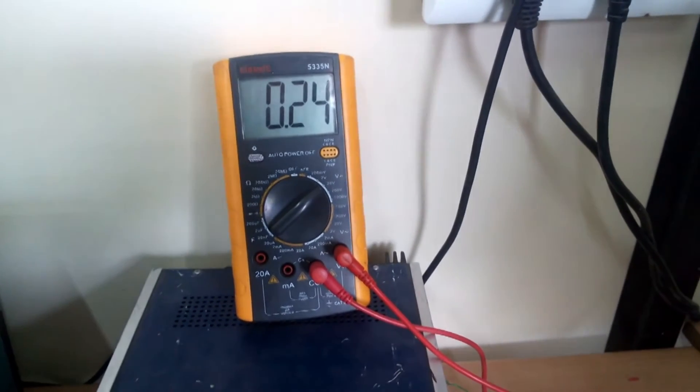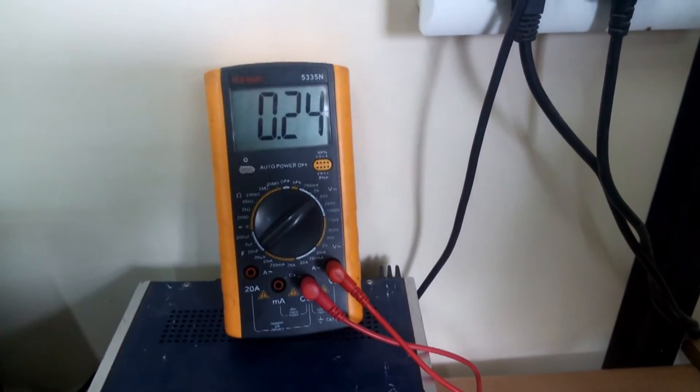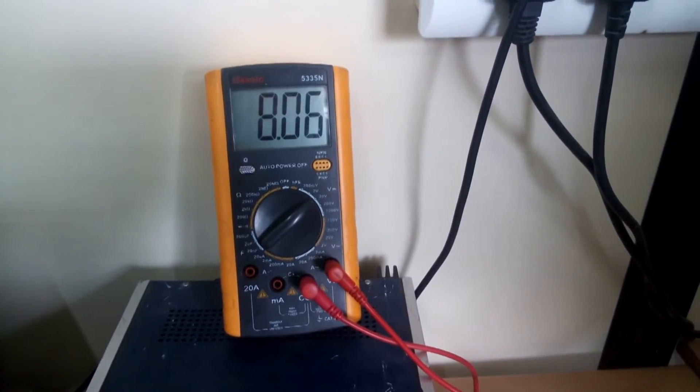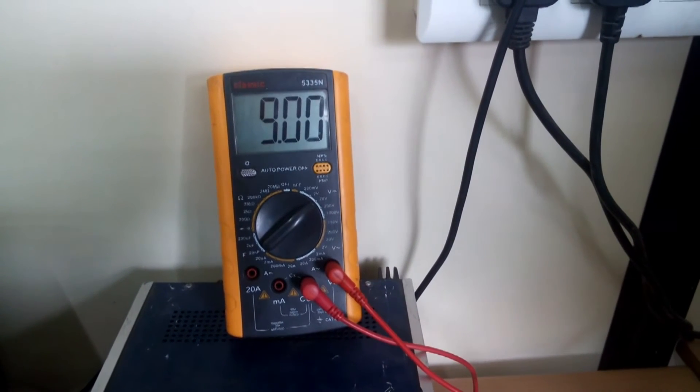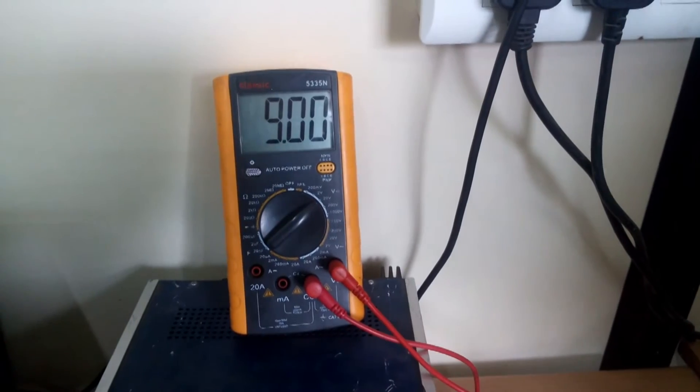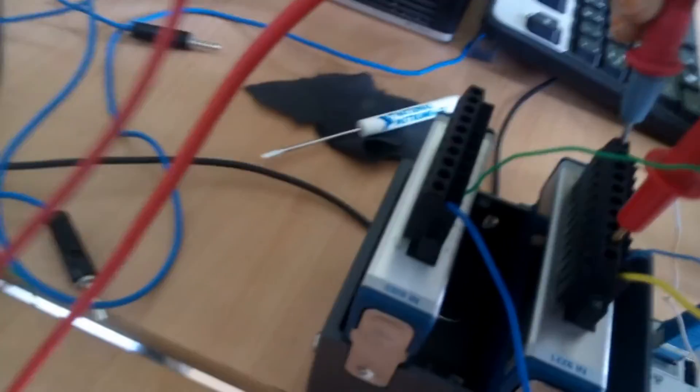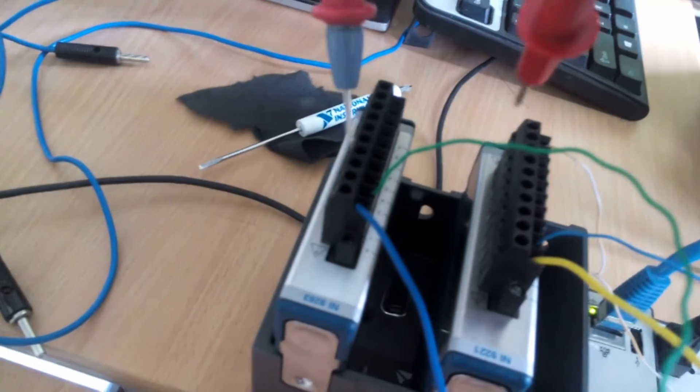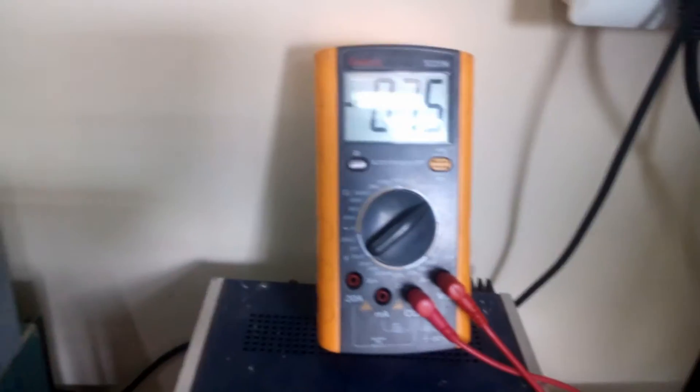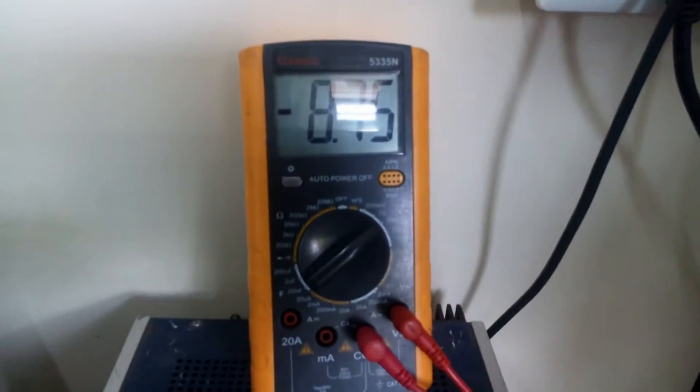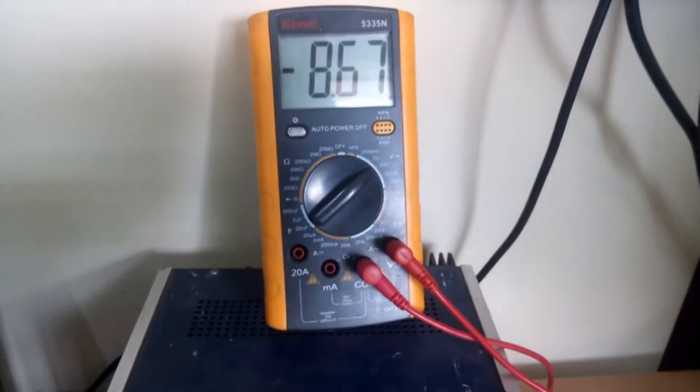Now here we have set our set point to 0.24 volt. And our process variable to 9 volt. Now the output should come negative. Here we can see that in analog output module. I have taken reading from analog input. Now we will see. Now reading of analog output. It should come negative. As we can see that. It is coming as negative. Minus 8.75. The difference of both.